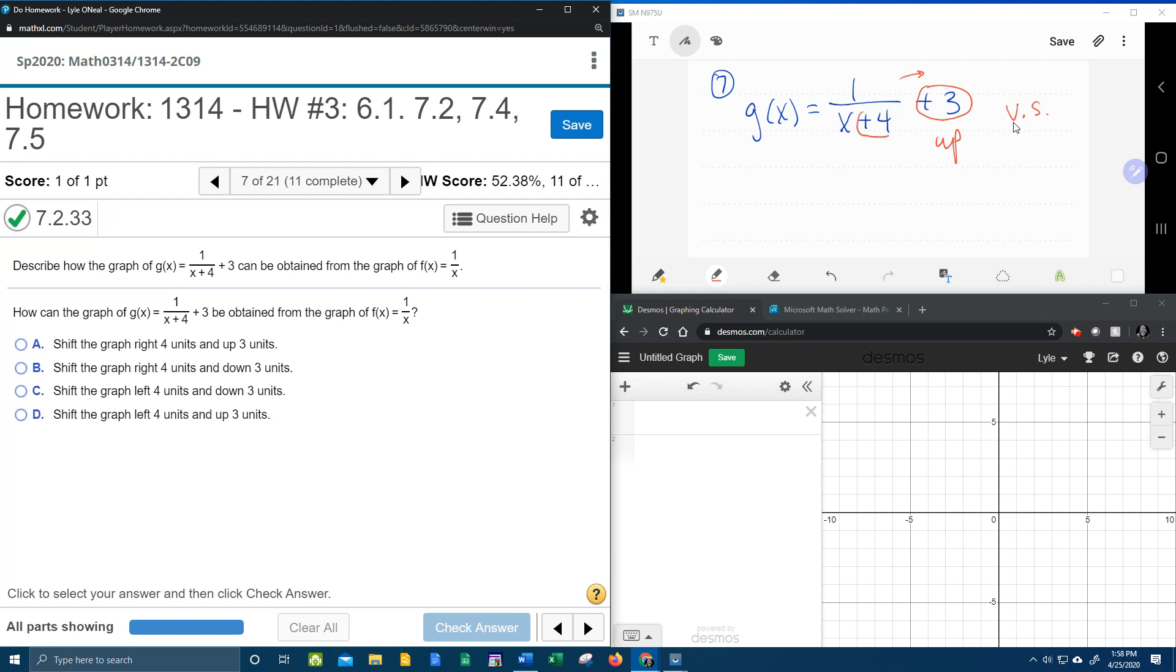Numbers that are added or subtracted inside the function, here the 4 is inside the fraction, that's considered to be inside the function. Notice it is directly added or subtracted to the variable. That is considered to be a horizontal shift. Plus is left, minus is right.